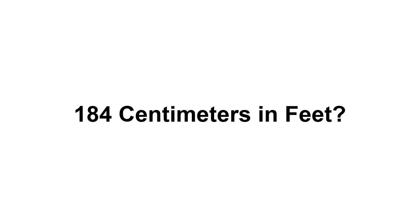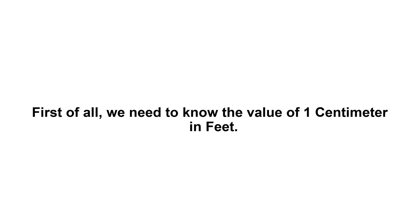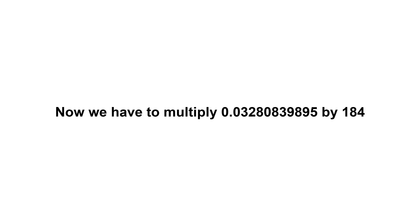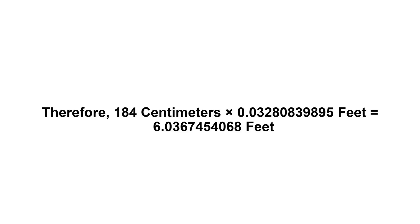184 centimeters in feet. First of all, we need to know the value of one centimeter in feet. One centimeter equals 0.03280839895 feet. Now we have to multiply 0.03280839895 by 184. Therefore, 184 centimeters times 0.03280839895 feet equals 6.0367454068 feet.